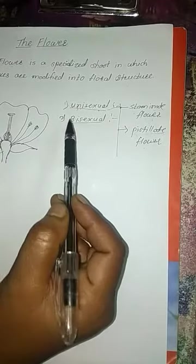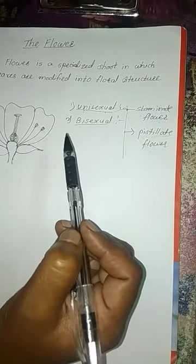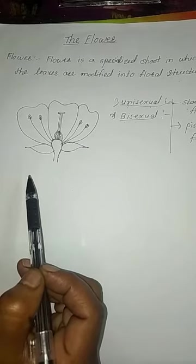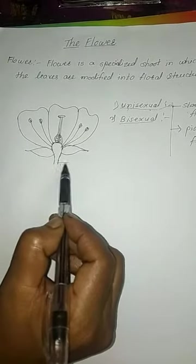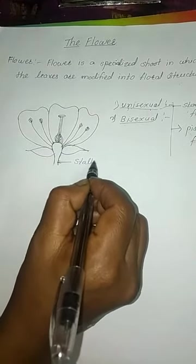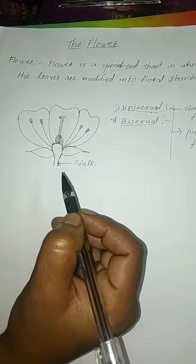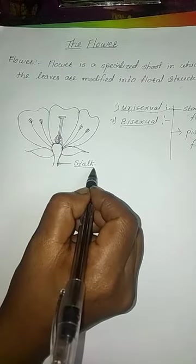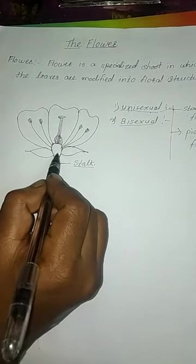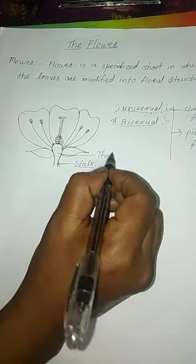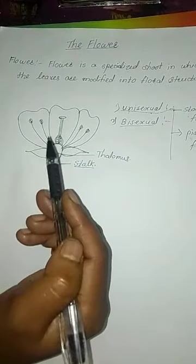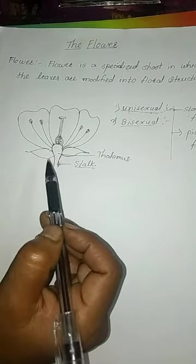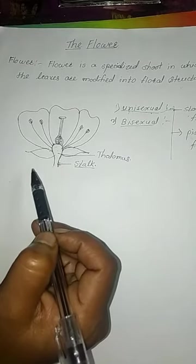The bisexual flower contains both male and female gametes. Now I will explain the parts of the flower. The lower part of the flower is called the stalk, which holds the flower to the branch of the plant. The next part is called the thalamus, also known as the receptacle. All four important floral parts are borne on the thalamus, which is the base of the flower.